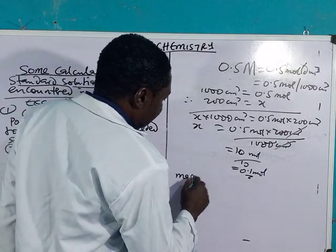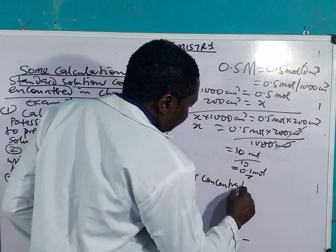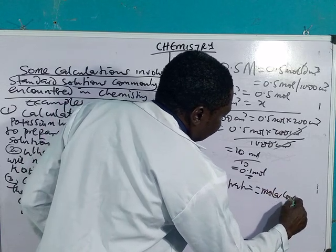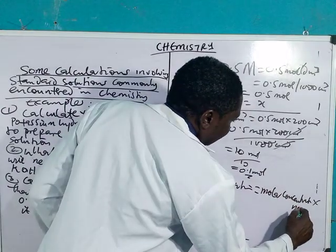But the question asks to calculate the mass of potassium hydroxide. Therefore, you now say mass concentration equals molar concentration times molar mass.